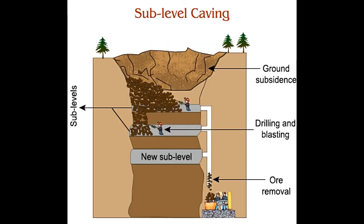Sub-level caving. This method involves making a series of horizontal channels, or sub-levels, called drifts in the ore body. Excavation occurs first in the topmost channels, and the empty spaces — or stopes — created by mining are not backfilled. This causes the host rock to continuously exert pressure on the ore, causing it to collapse at the bottom of the stope, from where it is collected by making newer sub-levels. Uses low-grade, friable ore deposits — iron, copper, nickel, and gold mines, and deposits where both the ore and rock are breakable.